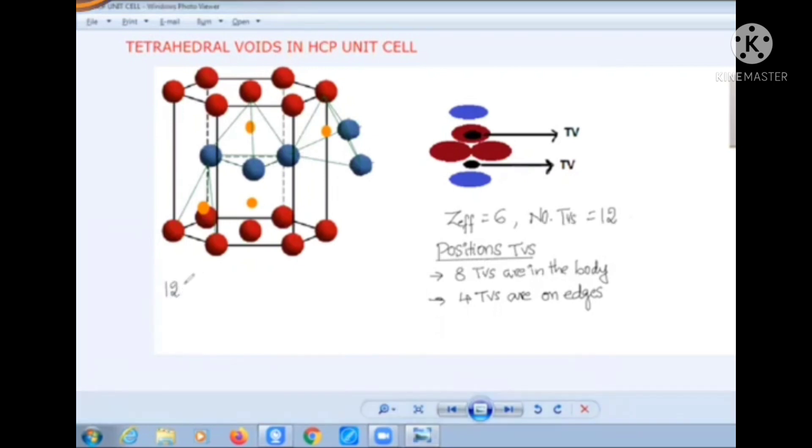But contribution of each edge towards each unit cell is one third. 12 into 1 by 3, 4. Each edge is shared by three unit cells. So the contribution will be one third by each tetrahedral void on the edge. And there are totally 12 tetrahedral voids on edges. Together the effective number of tetrahedral voids from edges is four.